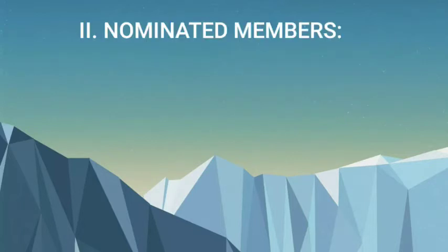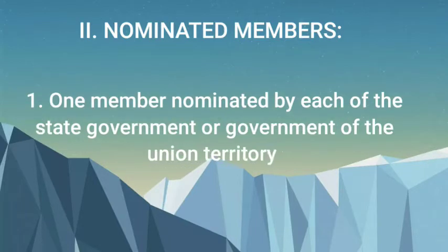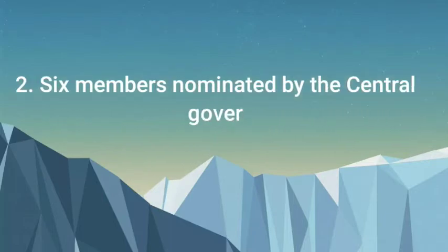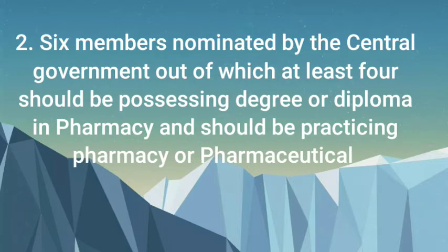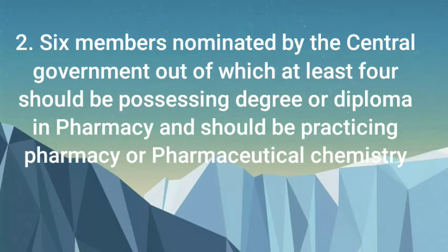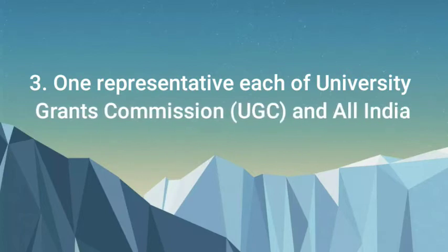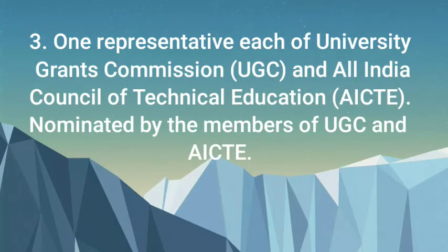Nominated Members: (1) 1 member nominated by each of the state government or government of the union territory, who shall be a registered pharmacist. (2) 6 members nominated by the central government, out of which at least four should be possessing a degree or diploma in Pharmacy and should be practicing Pharmacy or Pharmaceutical Chemistry. (3) 1 representative each of University Grants Commission (UGC) and All India Council of Technical Education (AICTE), nominated by the members of UGC and AICTE.